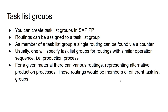The way to think about this is that a routing represents a production process, and for a given product there could be various production processes for manufacturing it. In that case, those alternate production processes — meaning alternate routings — will then be members of different task list groups.